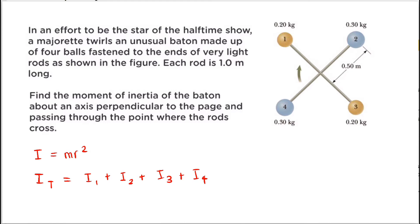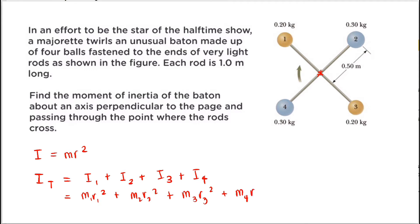Since our axis of rotation is perpendicular to the page and passing through the point where the rods cross — meaning it's at this center point — you can think of placing your pen on the page here, with the pen acting as the axis of rotation. To determine the Moment of Inertia of each object, we expand: I1 = M1·R1², I2 = M2·R2², I3 = M3·R3², and I4 = M4·R4².